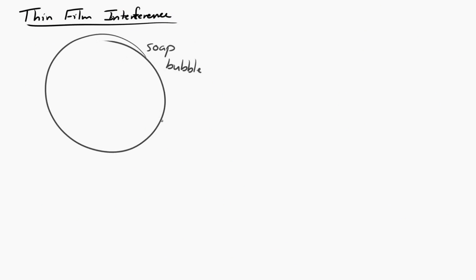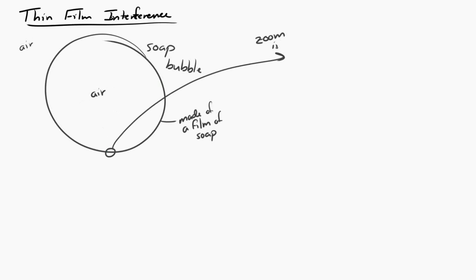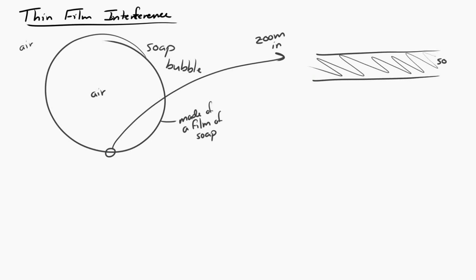Now let's shift gears and talk about thin film interference, starting with a soap bubble. A soap bubble is really just a shell of thin soap film with air on the inside and air on the outside. If we zoom in really far into this, we can ignore the curvature of the bubble and we really just have a flat layer of soap with air on either side. Thinking about an incoming light wave, some of it would reflect and some of it would be refracted — we call this the transmitted part of the wave.